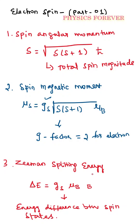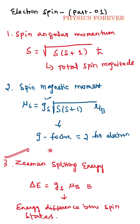We have discussed these from the last three classes: what is meant by spin quantum number, magnetic spin quantum number, Bohr magneton, and number of possible spin states. Continuing from that, we discussed spin angular momentum, spin magnetic momentum, and the Zeeman splitting effect. These are all the most important things to remember while discussing electron spin.